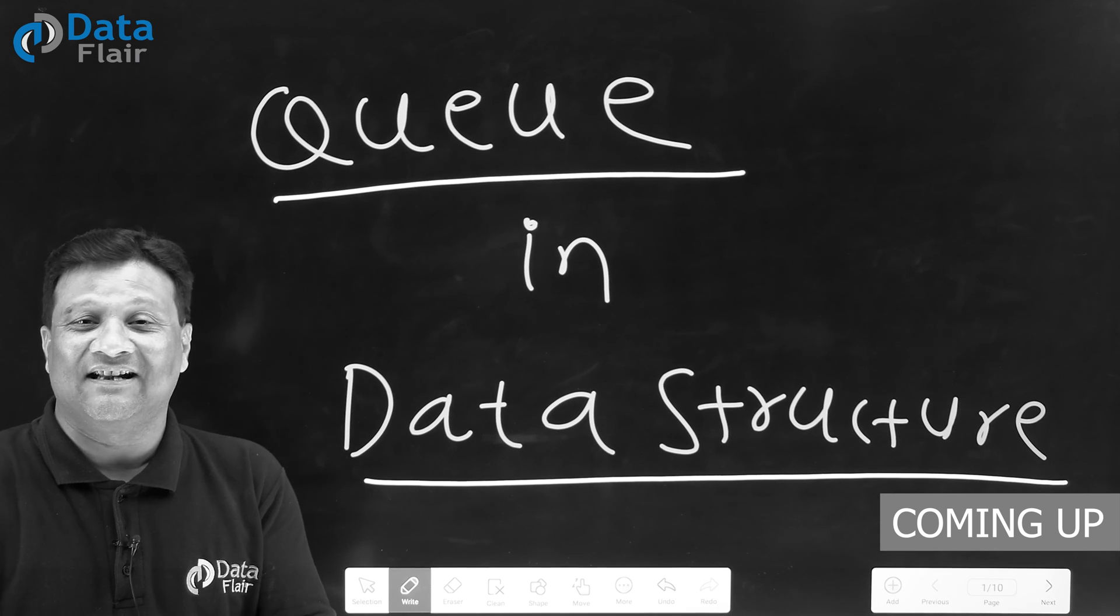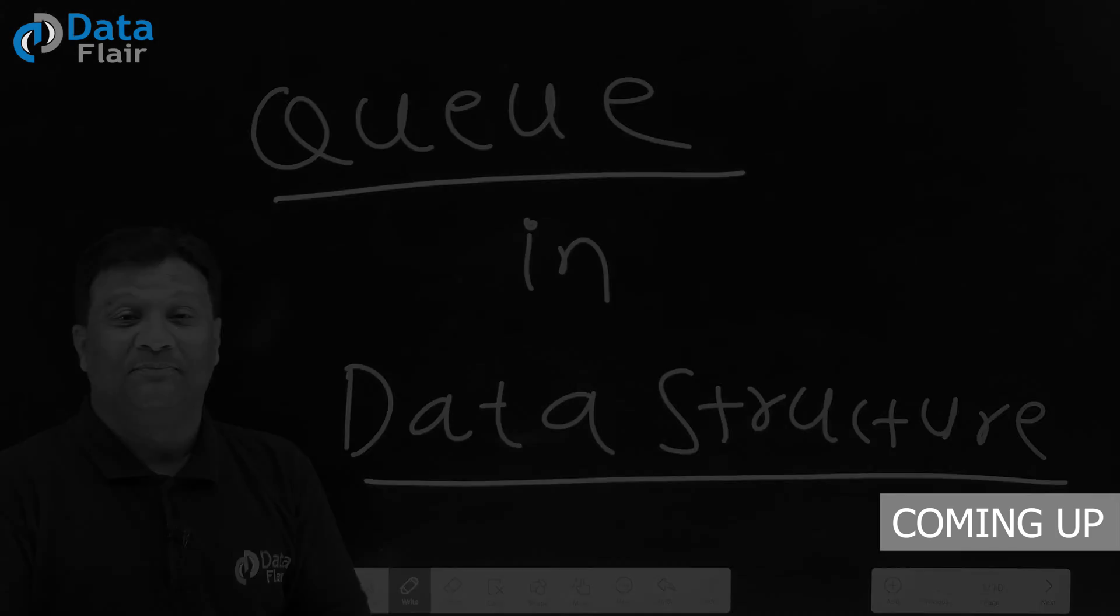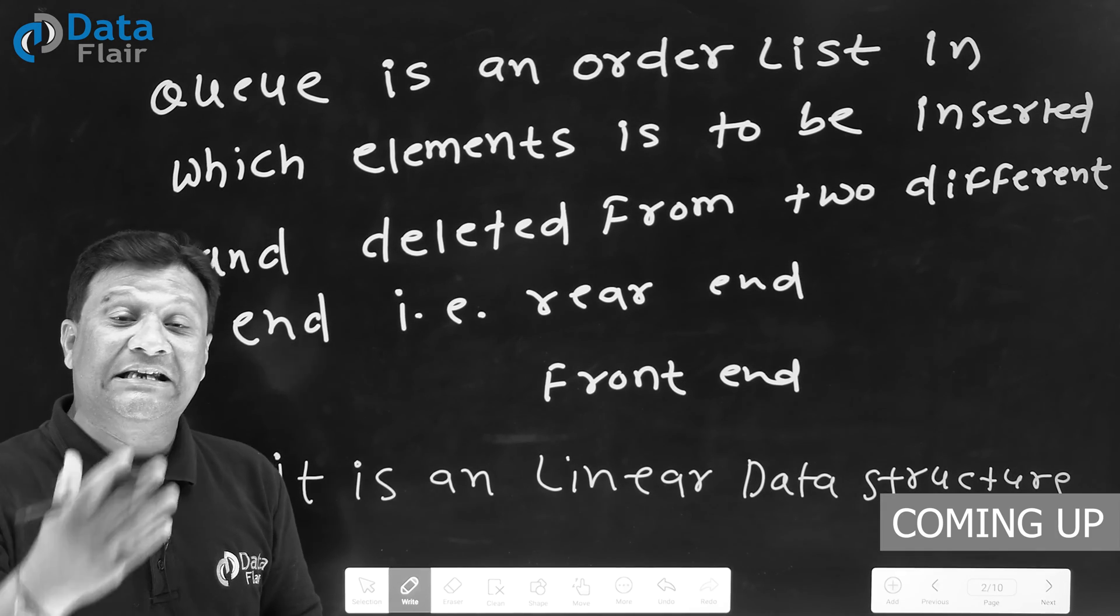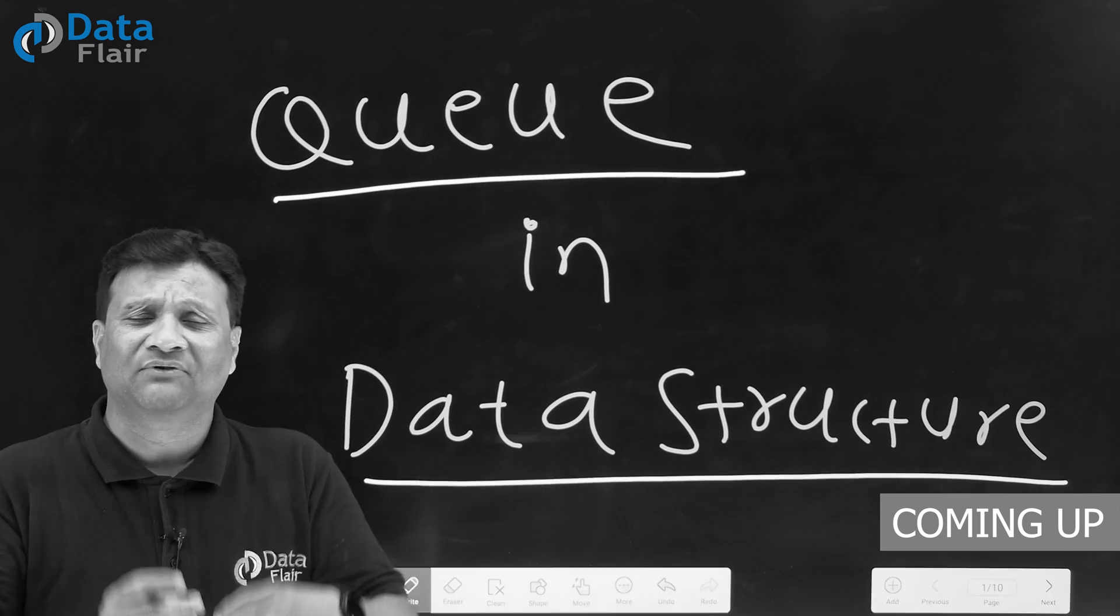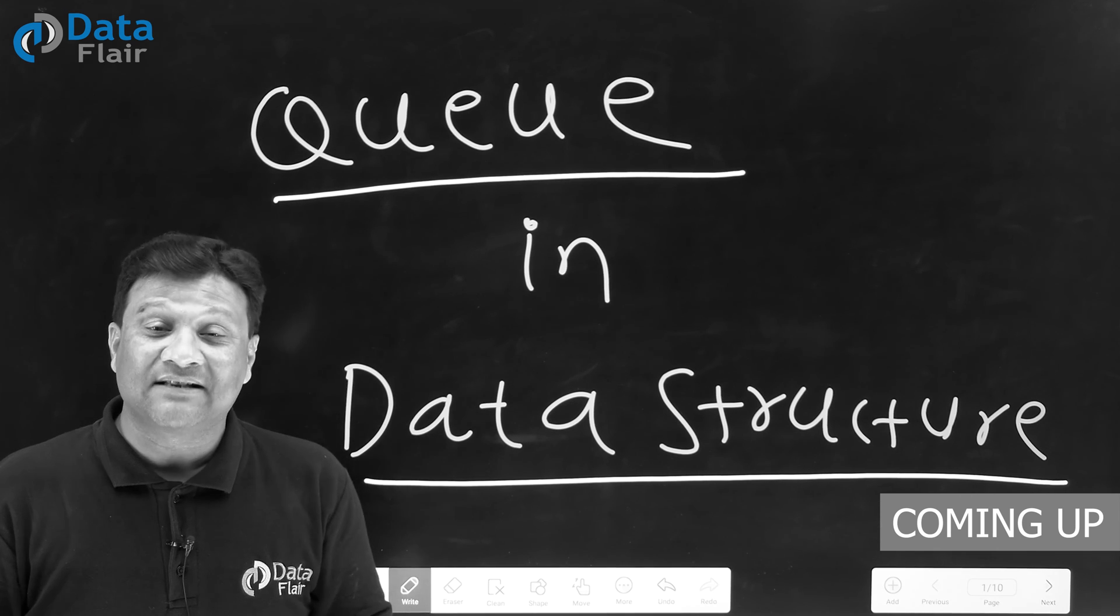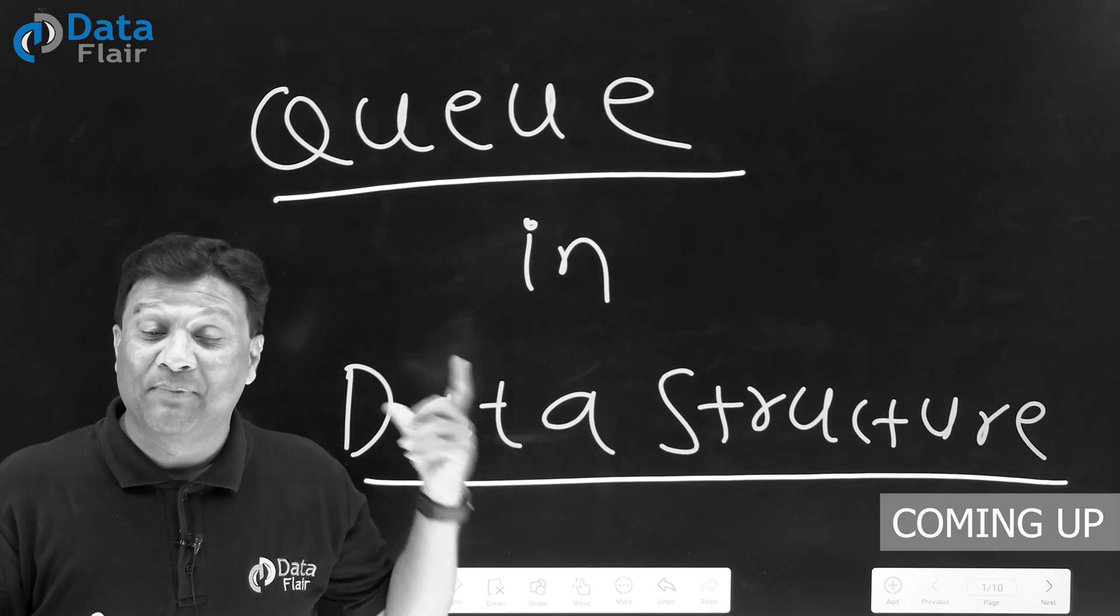Today we are going to talk about the next important concept and that is a Queue concept. Queue is an ordered list in which elements are to be inserted and deleted from two different ends. This is one of the most important topics. There are many places in your system, in computer science, where Queue is implemented.